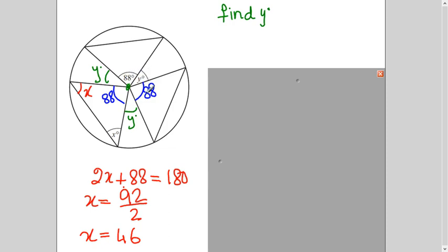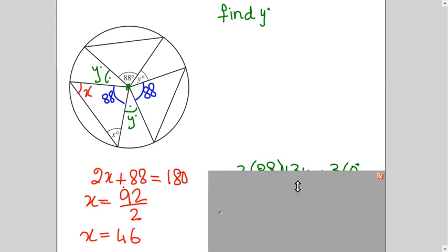So how many angles do we have here? 88, y, 88, y, 88, y. And these two y's are because of symmetrical property. So I will add them up and put it equals to 360.